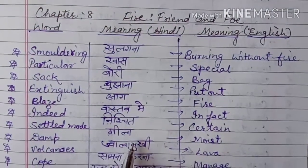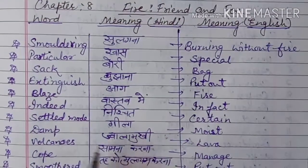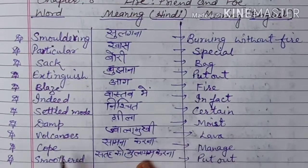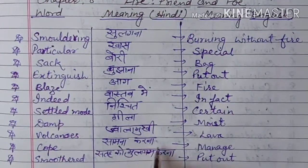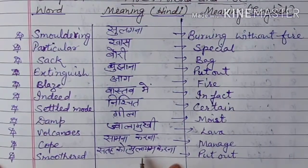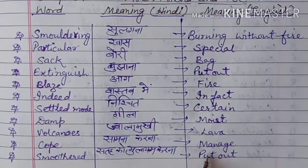Damp: gila, moist. Volcanoes: jala mukhi, lava. Cope: saamna karna. Smoother: saaf ya mulayam karna, to make clean or smooth. Put out: bujana.